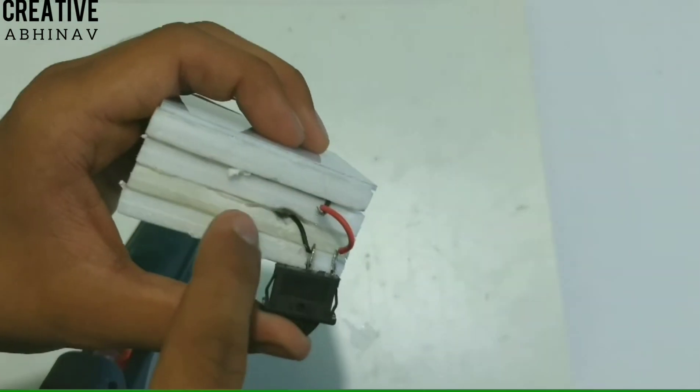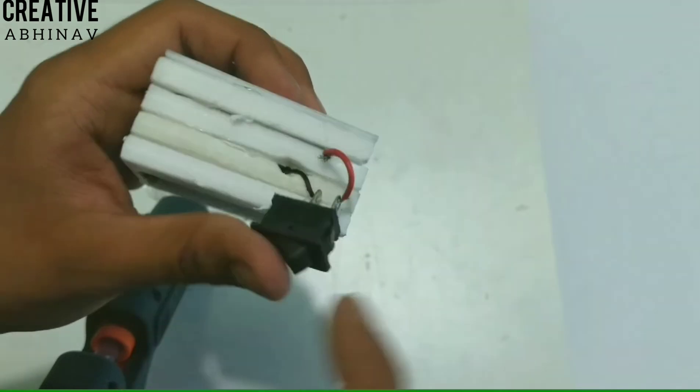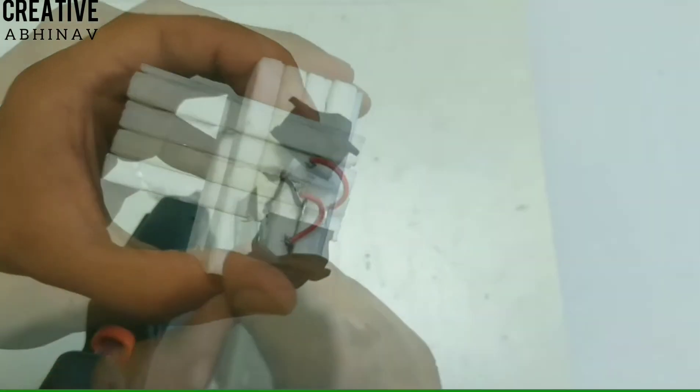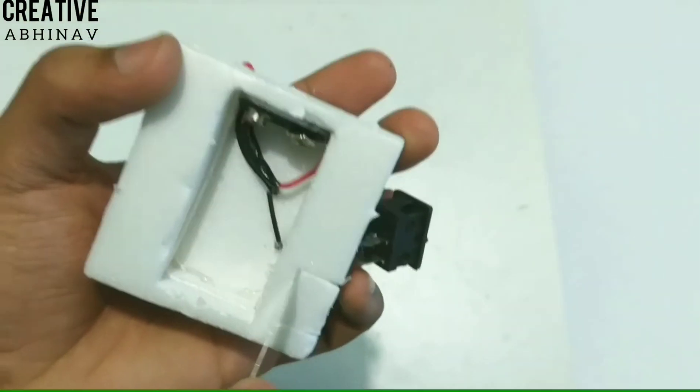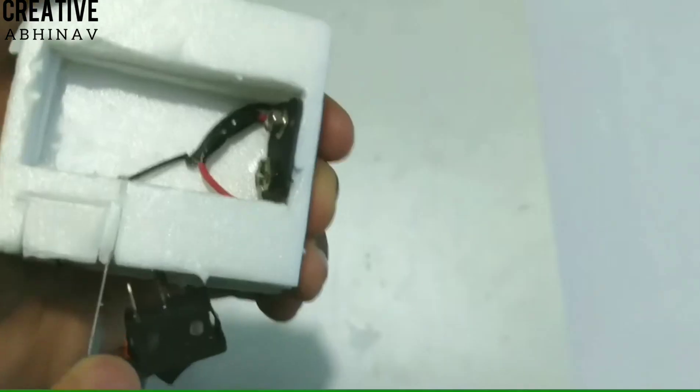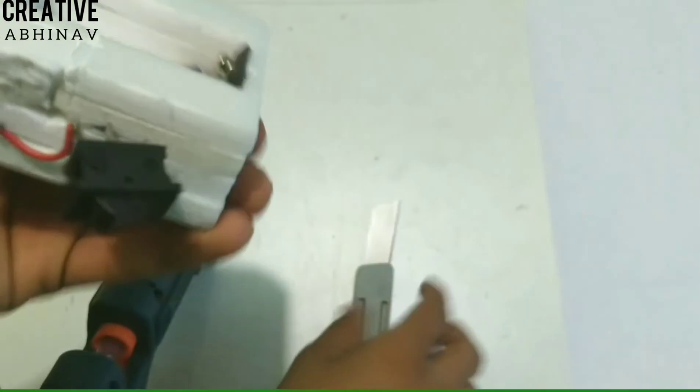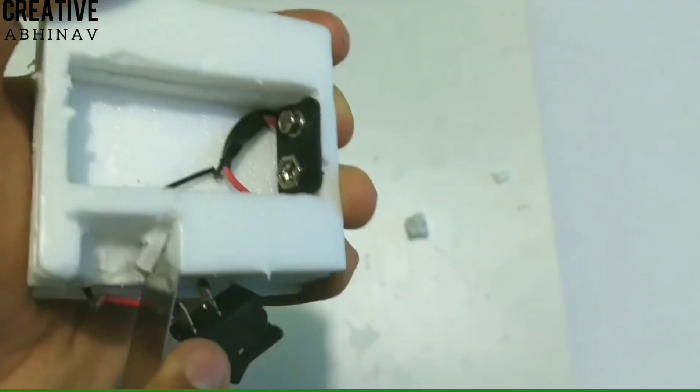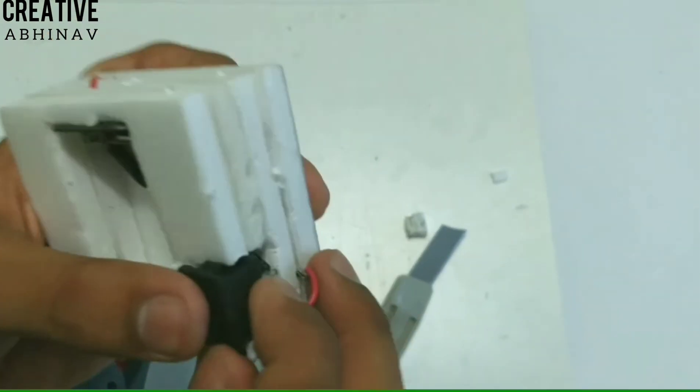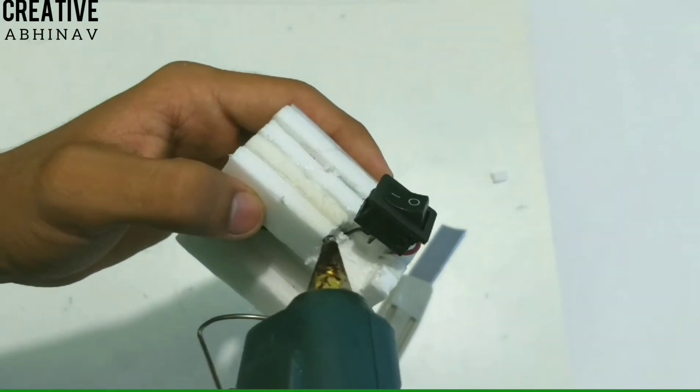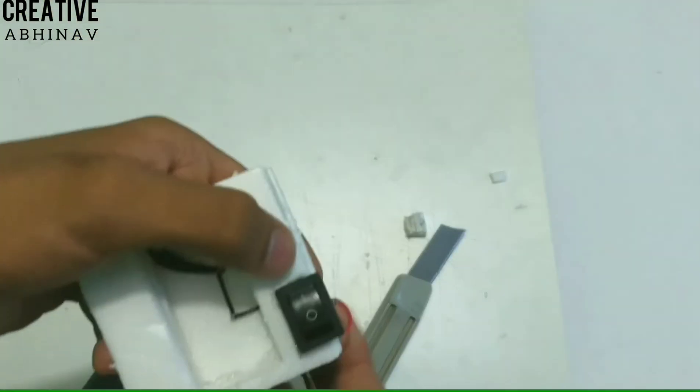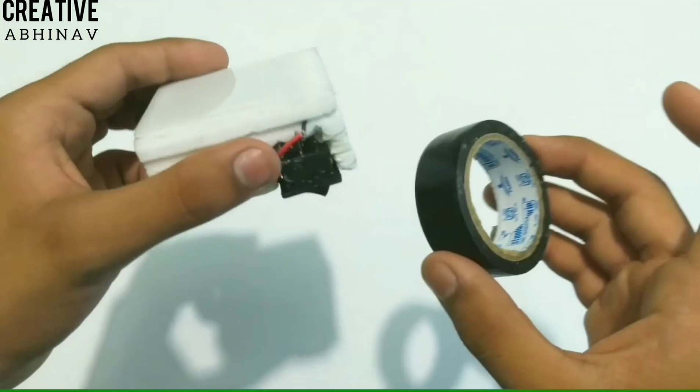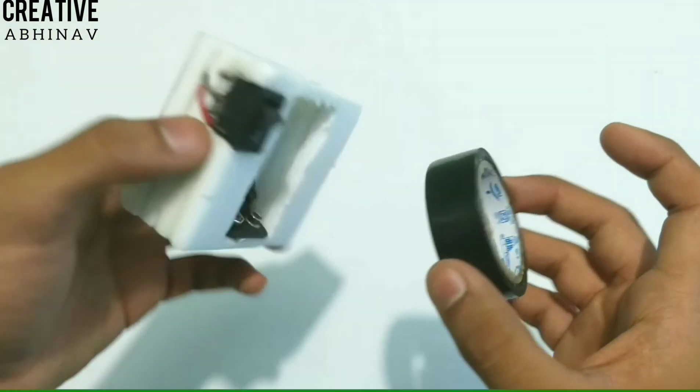Now we have to cut out a rectangle from the compressed thermocol frame for the on-off switch. Now we have to cover the compressed thermocol frame with electric tape.